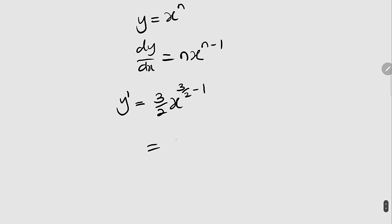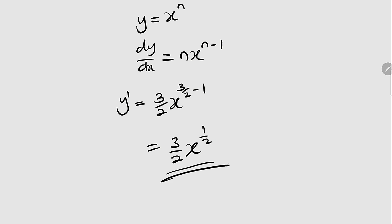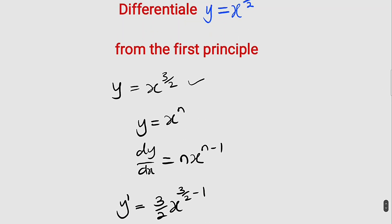So this will give us 3 over 2, x to the power of 1 over 2, because 3 over 2 minus 1 is 1 over 2. So this is our solution. We want to find out whether we are going to get the same solution if we use first principle.